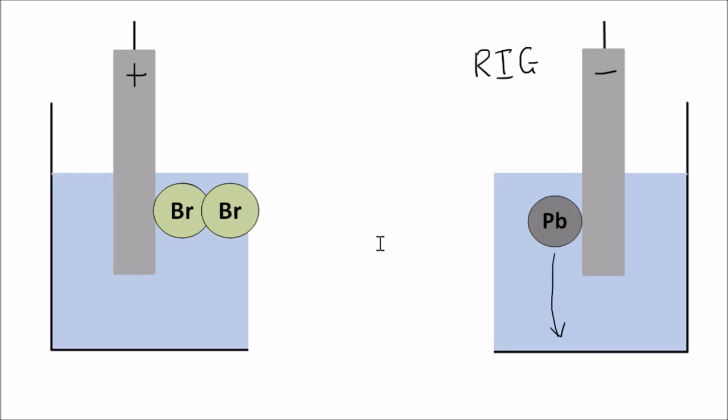Now we have bromine gas molecules forming at the positive anode. We say that the bromide ions have been oxidized, and oxidation is loss of electrons.